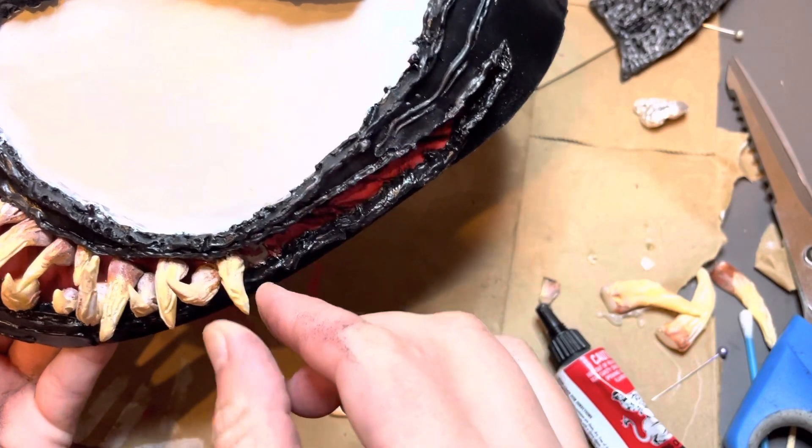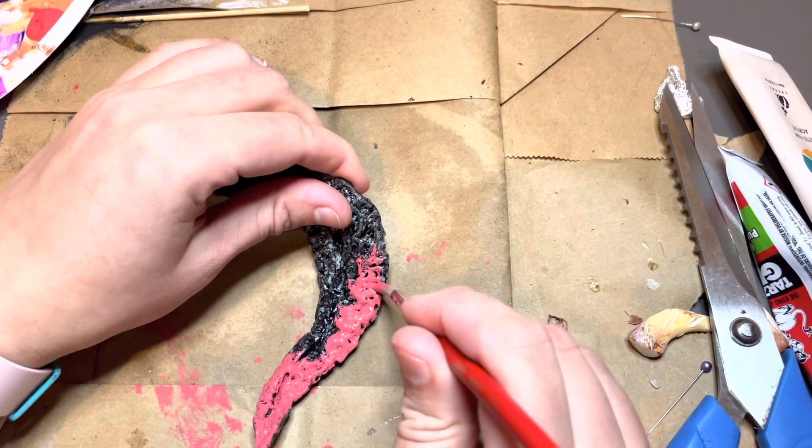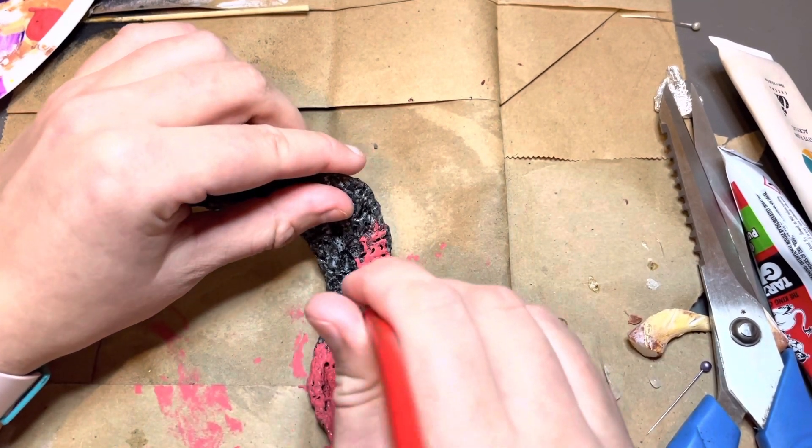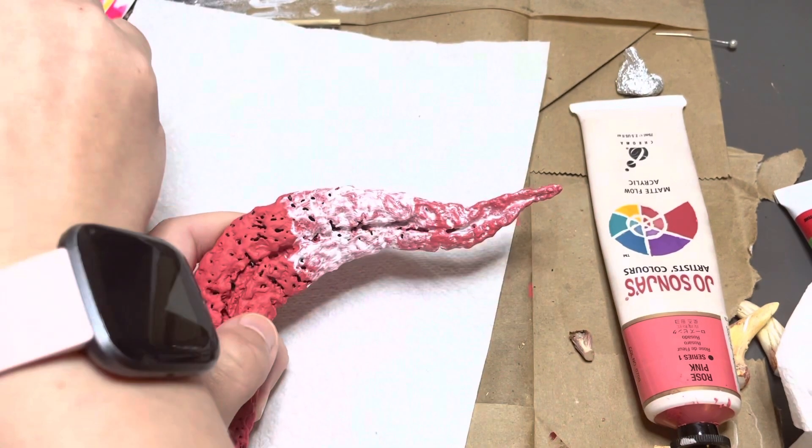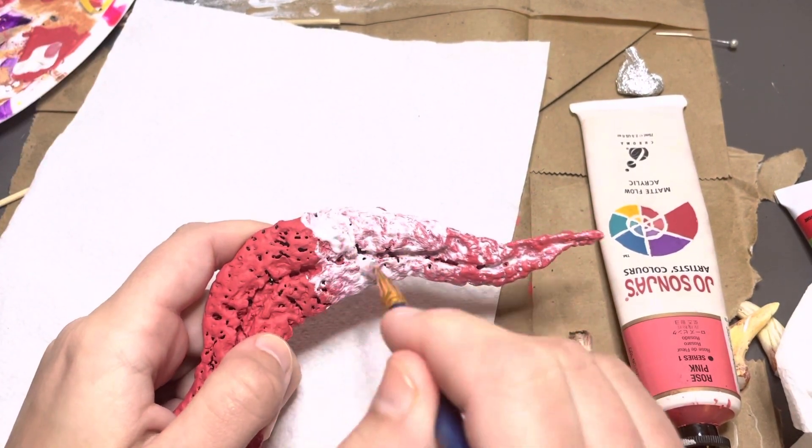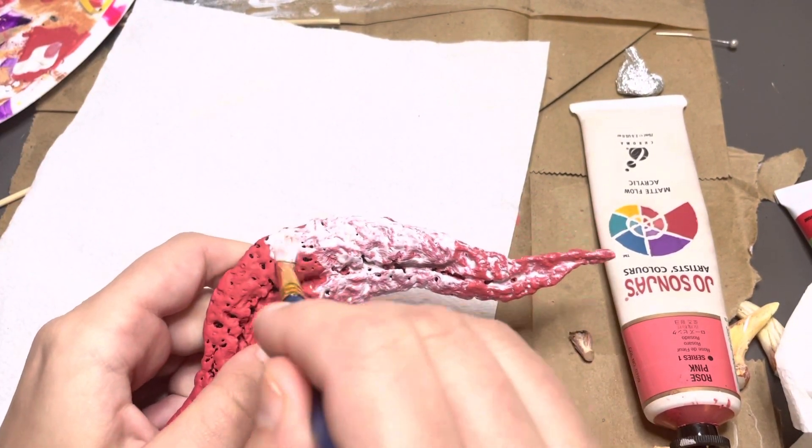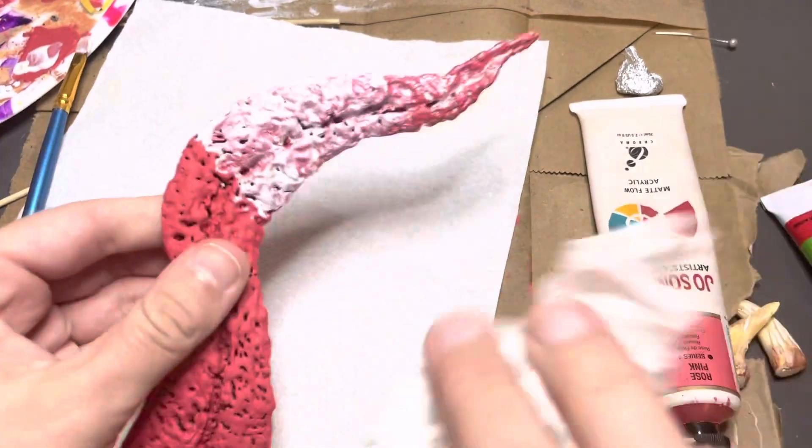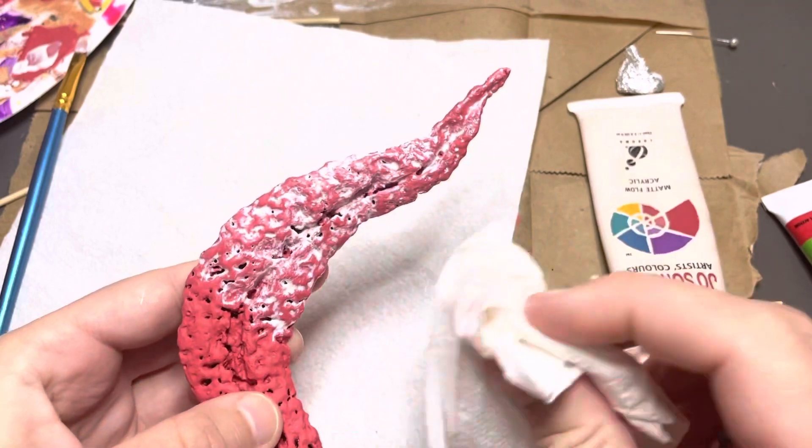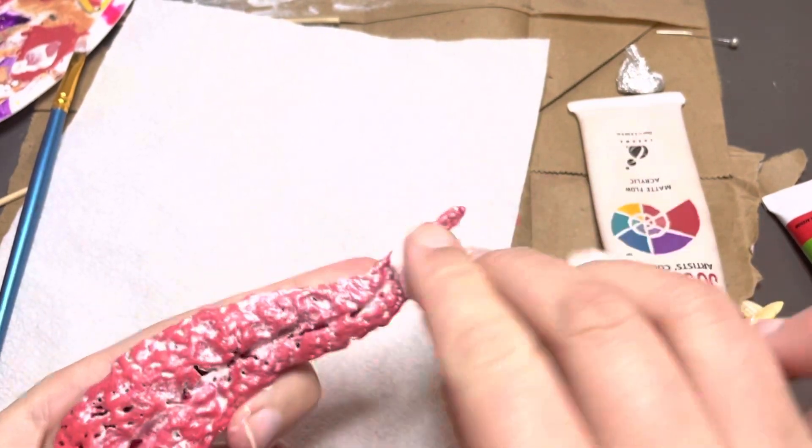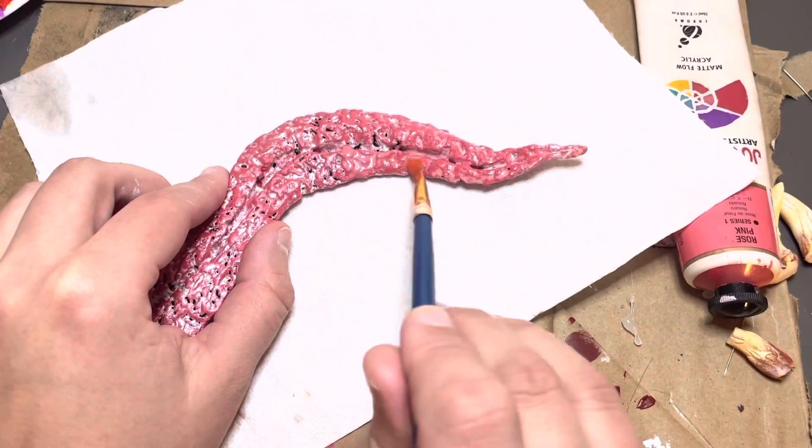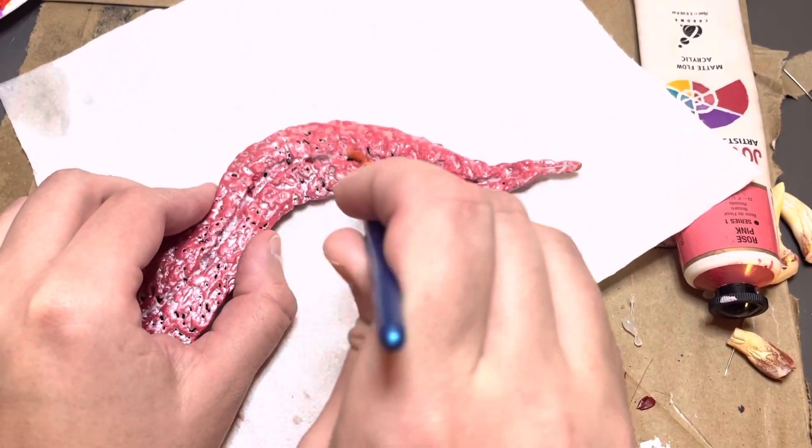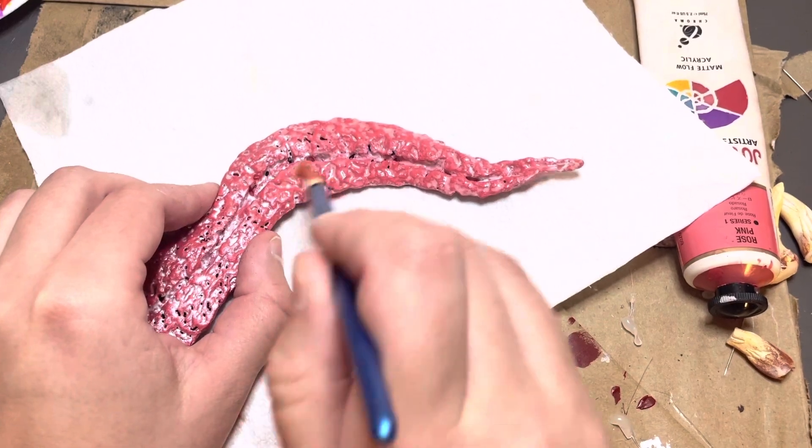Once our teeth are glued in it's time to paint the tongue. I started off with the same pink that I used for the upper mouth bits, but it was very flat looking, so to add some dimension I took the white pearlescent paint that I used for his eyes and painted that on really thickly because I wanted it to get into all of the little crevices. I still wanted the pink to be very visible so I took a paper towel and wiped off a lot of the white. The colour didn't look quite fleshy enough so I decided to add some red. I did a red wash over the whole thing, and that is just a little bit of red paint and a little bit of water mixed together.